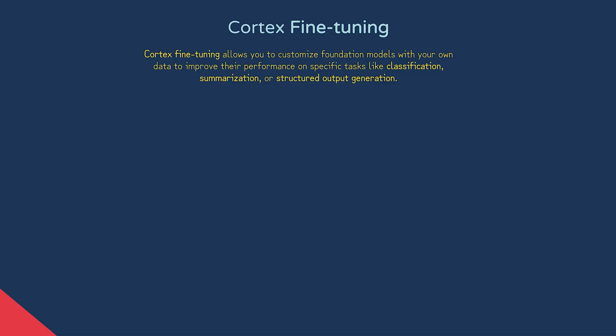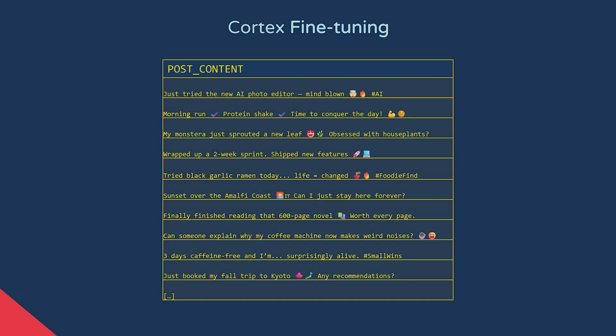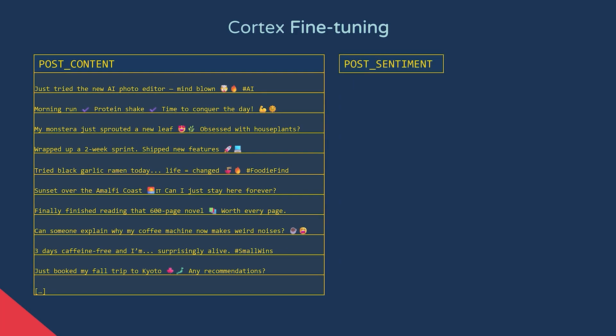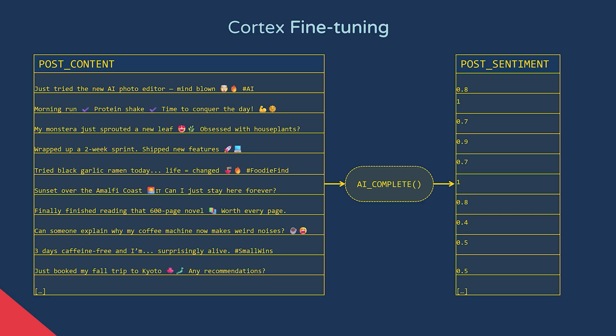Cortex fine-tuning is a way to take the output of a larger model and use it to train a smaller model, which in theory will be quicker, cheaper, and better at doing a specific task. Let's say we have a table with millions of social media posts and we'd like to derive a new column with each post's sentiment — the emotional tone of a piece of text. We could call the Cortex function AI_COMPLETE on millions of rows using a very large accurate model, however this would be quite costly.